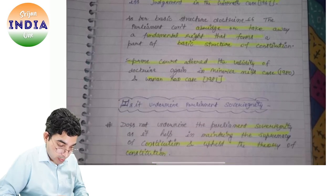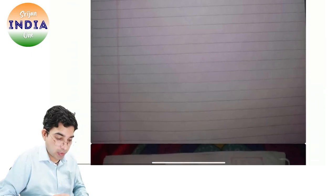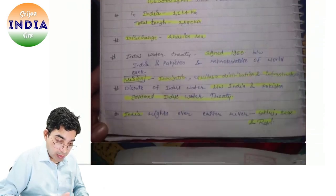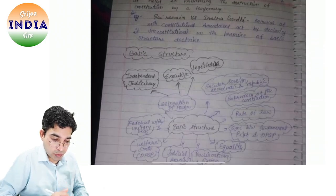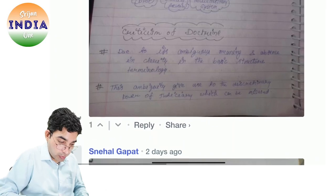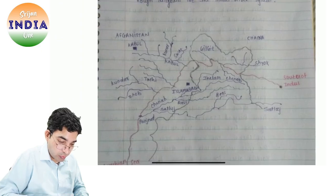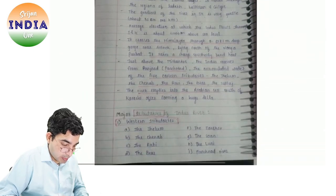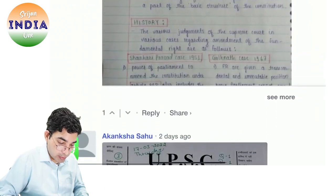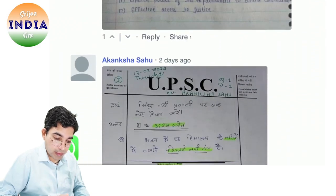Photos yahan one by one dikhne lag jayenge — uss box mein usko drag karke arrange kar sakte ho 1, 2, 3. So this is Ratna Priya — ye first page hai, Indus River System bataya — this is really nice. River bataya, right bank tributary — humko NCRT achhe se padhna tha aur usi ko yahan likh dena tha. Sunne par thoda yaad hota hai, padhne par aur yaad hota hai, jab usko likh lete hain to wo achhe se yaad ho jaata hai. Second — Basic Structure tha — ye bhi humne dekha, basic structure kya hota hai — aapne bahut achhe se likha hai, bahut mehnat se padh rahe ho.